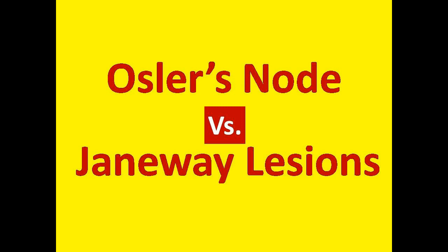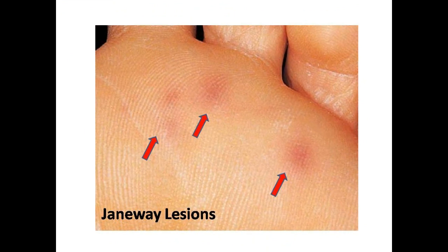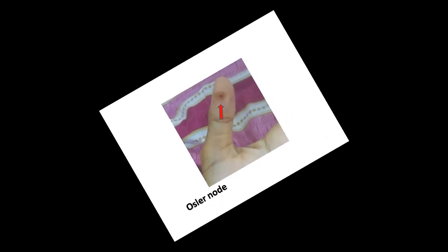Osler Nodes and Janeway Lesions are characteristic peripheral signs of infective endocarditis. Janeway Lesions are painless, erythematous lesions of the palms and soles.